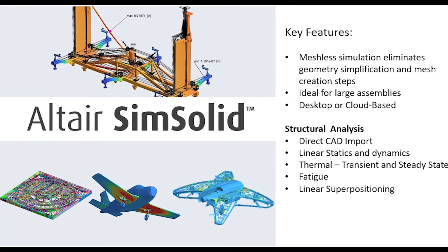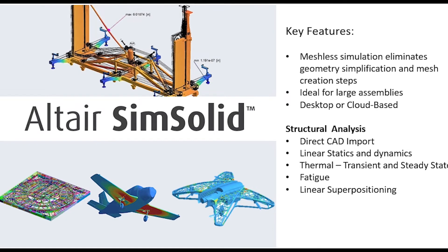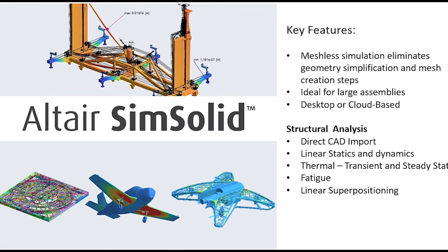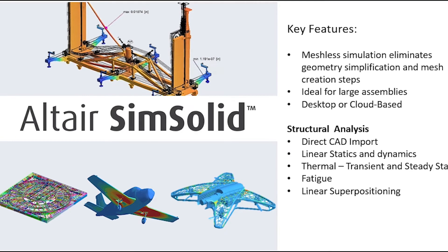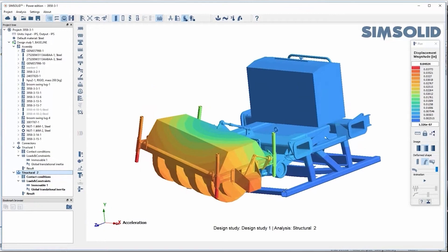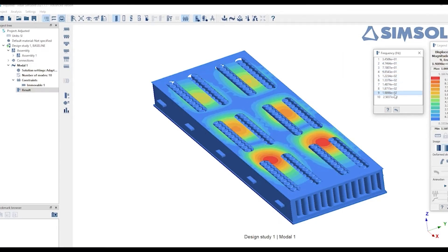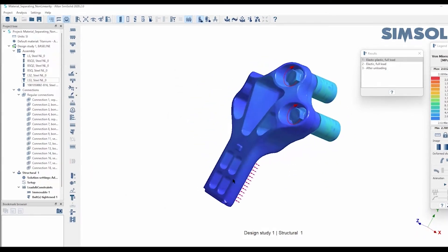Altair SimSolid is a product that has been gaining popularity over the last few years, mainly because it allows users to bypass some of the time-consuming and error-prone steps that are typically associated with simulation. SimSolid is a meshless simulation tool, so users don't have to worry about simplifying their geometry or creating a mesh. It's also widely used for large assemblies because you can get answers in seconds rather than minutes or hours, and it's NAFEMS accredited for accuracy.